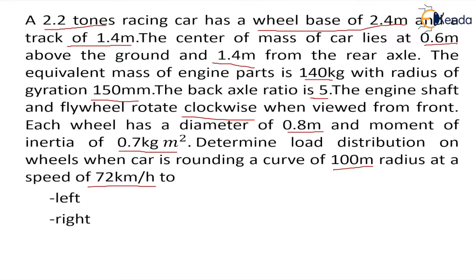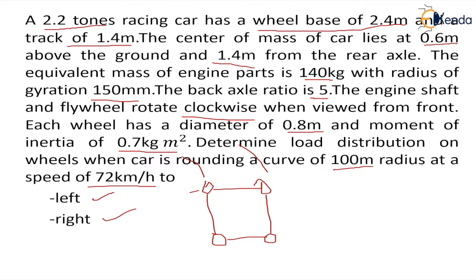To ensure the stability of the vehicle, the reaction due to weight should be greater than or equal to the reaction due to the gyroscopic couple on inner wheels plus the reaction due to the centrifugal couple on inner wheels. For left and right turns, the values of the reactions remain the same — what changes is the direction. If the vehicle is taking a left turn, those wheels become the inner wheels; if taking a right turn, the other set becomes the inner wheels.